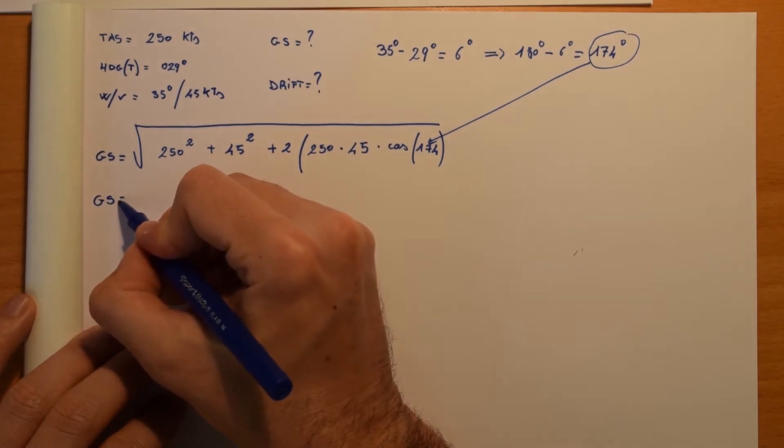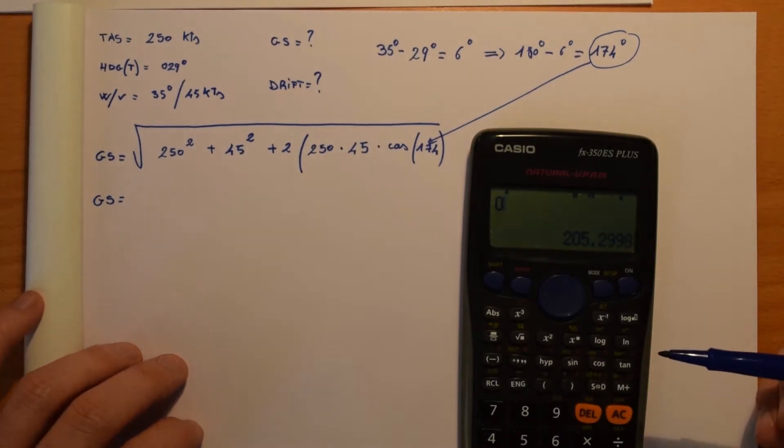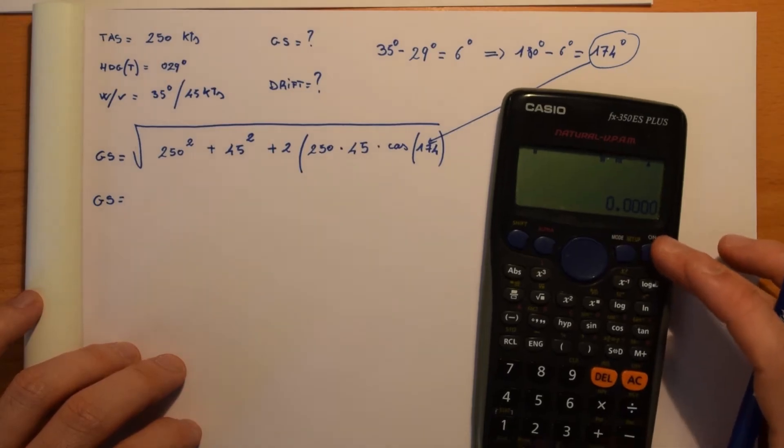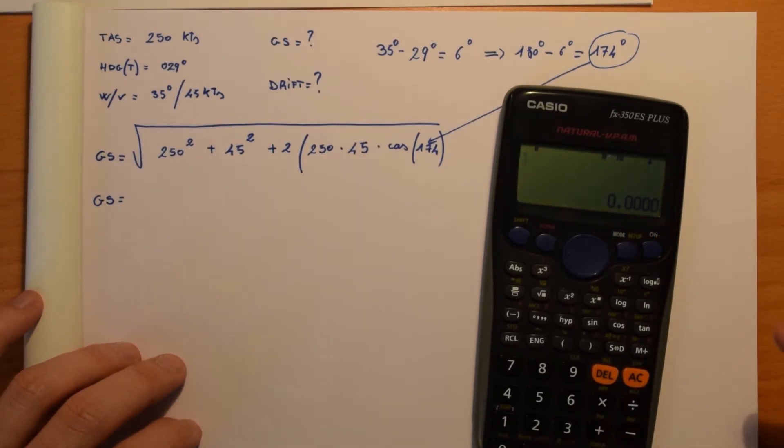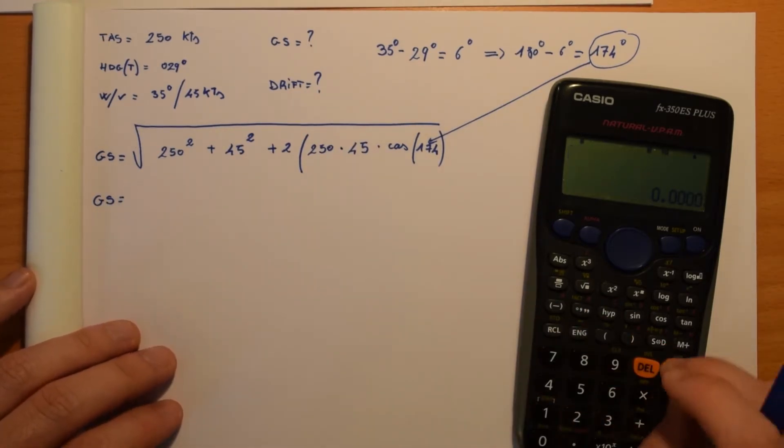Now that we have 6, we take 180 degrees minus the result of this subtraction, that is 6 degrees, and we get 174 degrees. So this number, we have to take the cosine, so cosine of 174. Now this is the formula we are going to use to solve this problem. Let's see how it counts. This is the calculator I used during all my exams and I have to say it's pretty good.